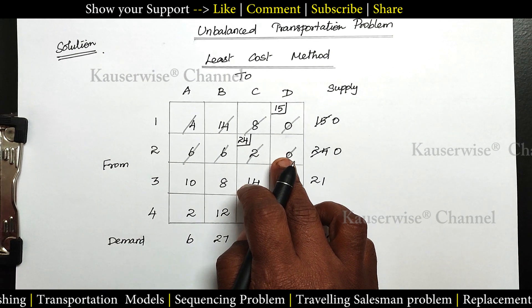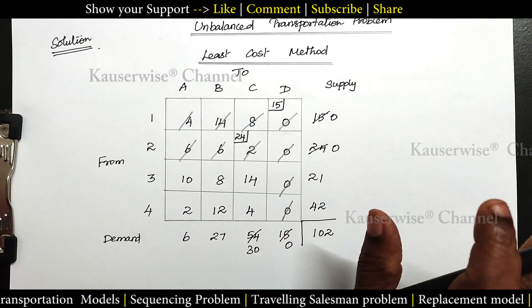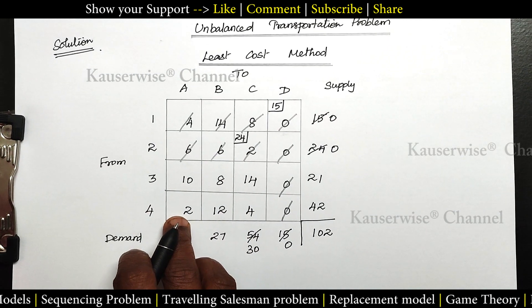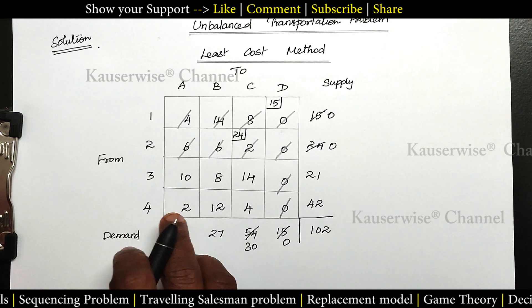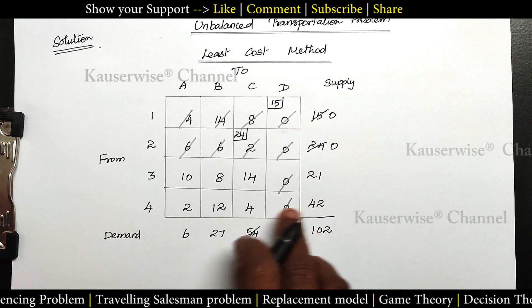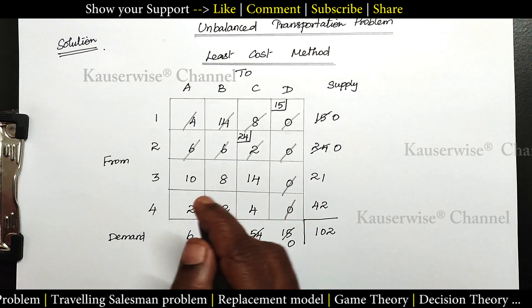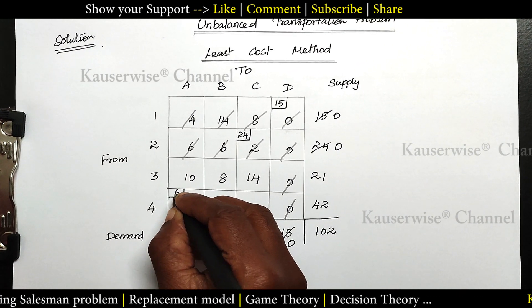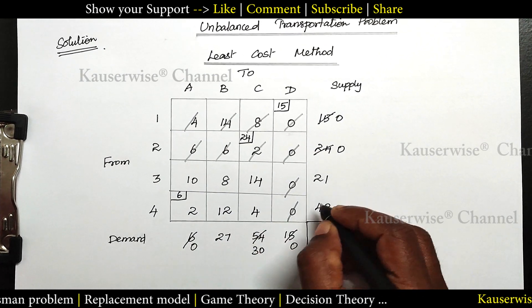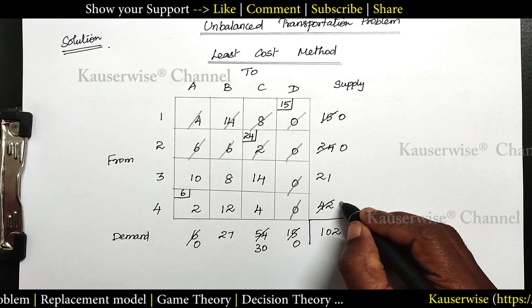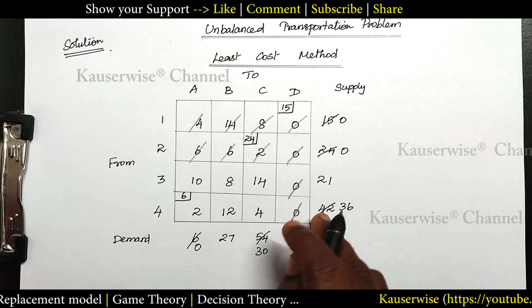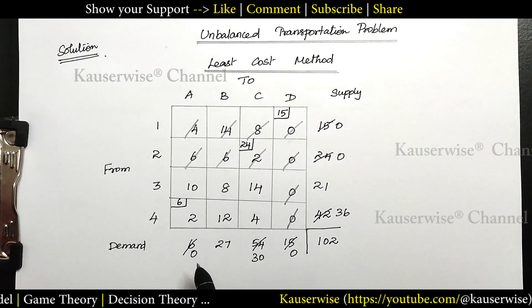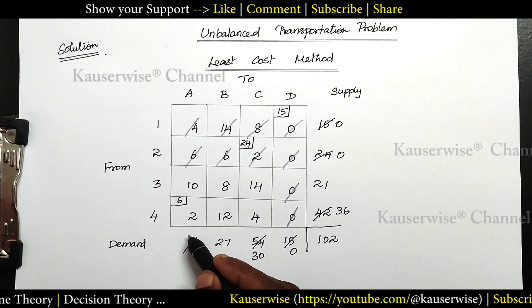After deleting that row, we follow the same procedure. From the remaining values the least cost is 2. Compare demand and supply: 6 and 42 — 6 is the lesser value. So allocate 6 here; demand becomes 0 and supply balance is 36. This column gets cancelled.